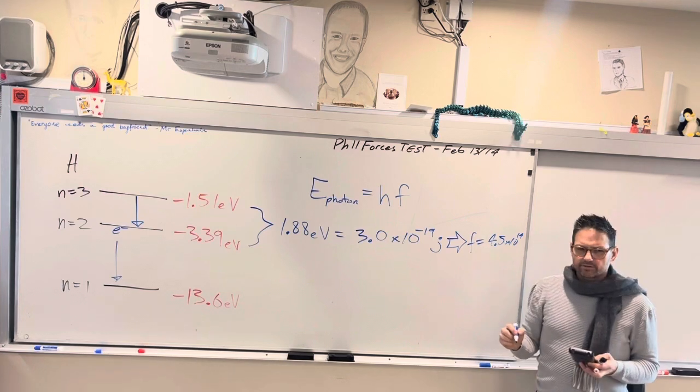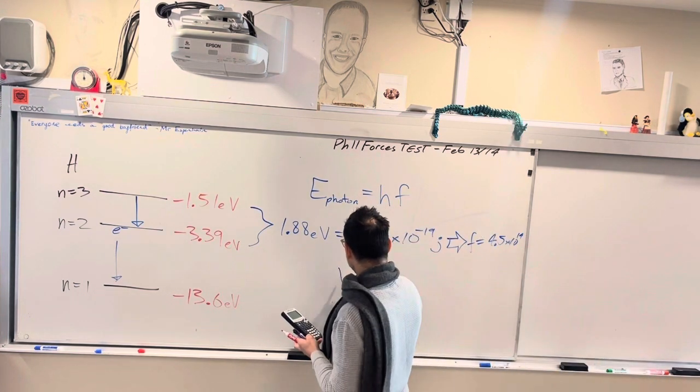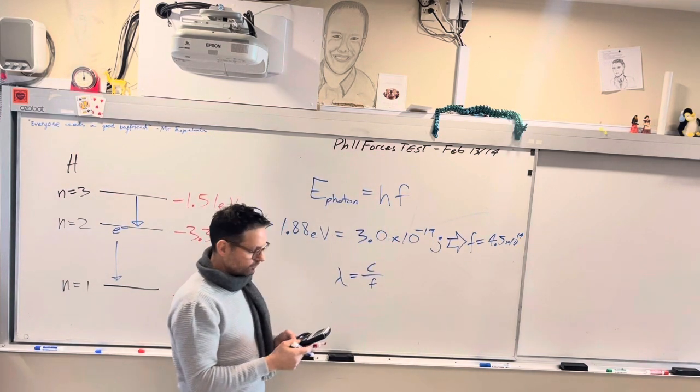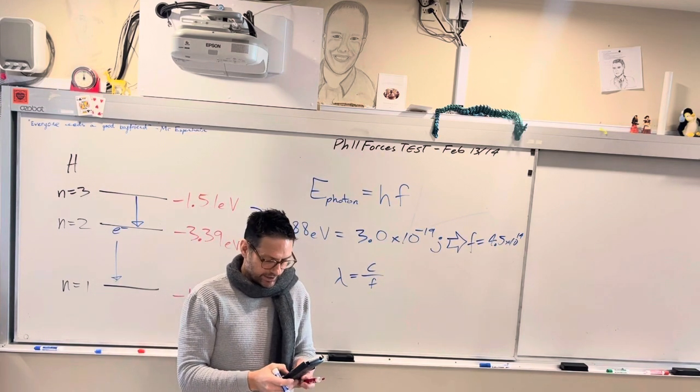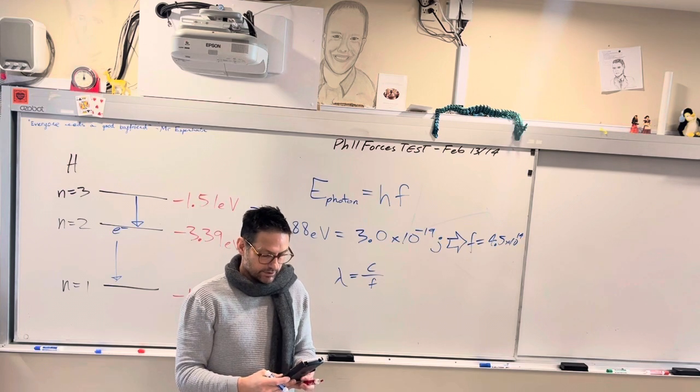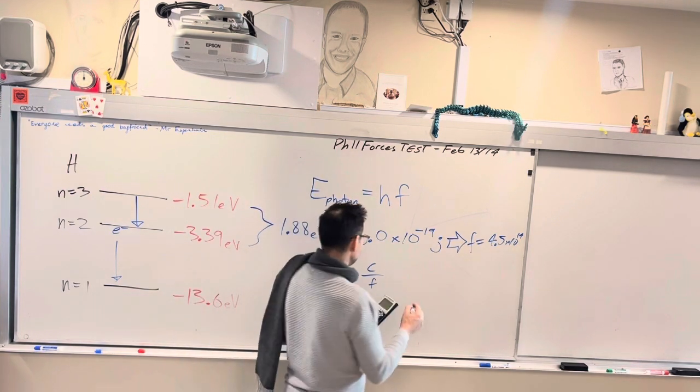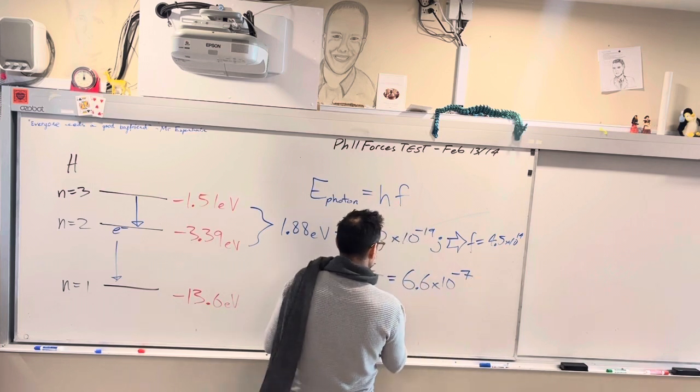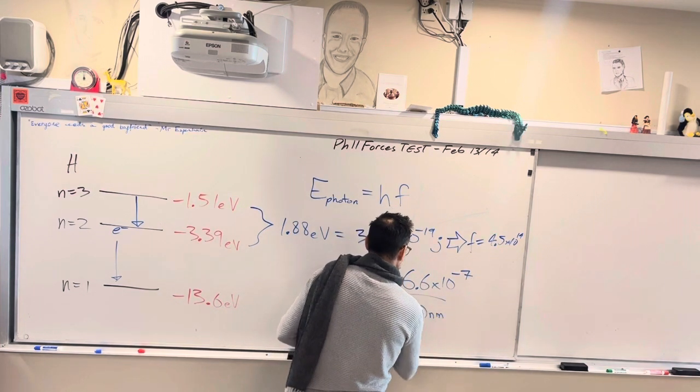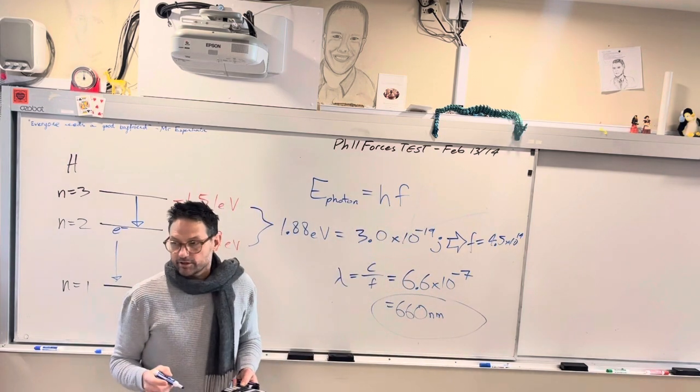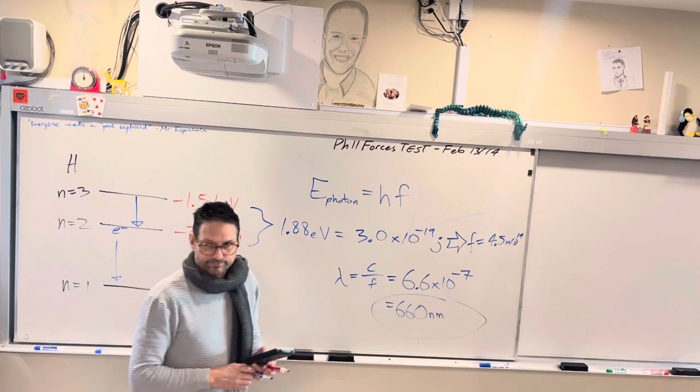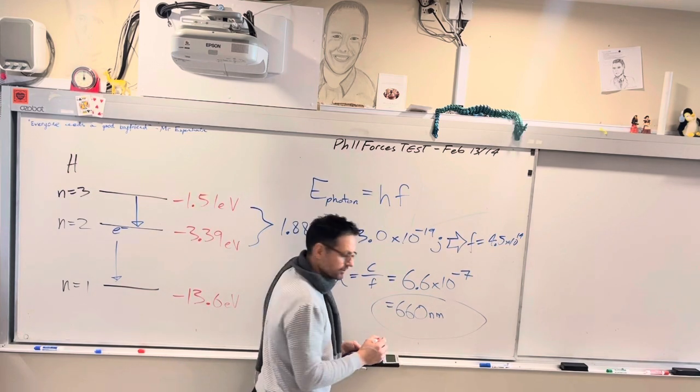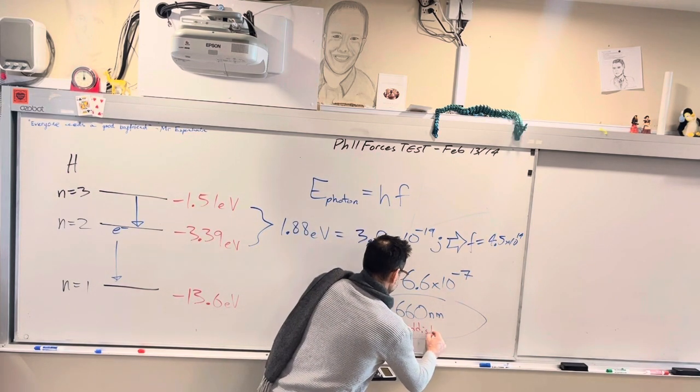And we would turn that into a wavelength using speed of light. Speed of light divided by frequency so x to the minus 1 that answer and then multiply by 2.99 times 10 to the 8 and you get about 6.6 times 10 to the negative 7 which is 660 nanometers. What color is that? Pretty close to red right? Reddish.